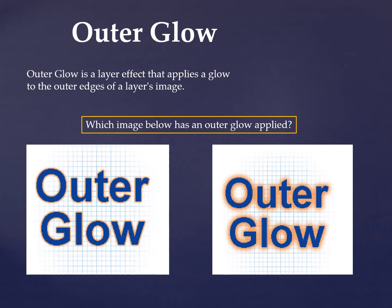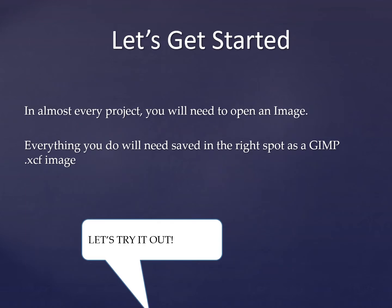Outer glow: outer glow is a layer effect that applies a glow to the outside edge of your words. It almost makes your word look like it's a neon light glowing in the night. Which image below has that outer glow applied to it — the one on the right or the one on the left?